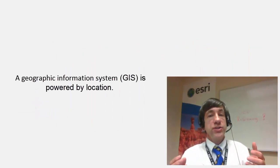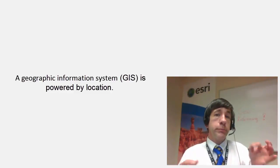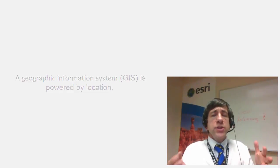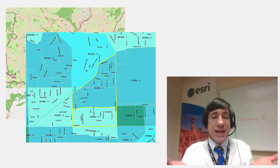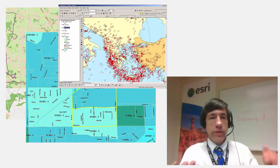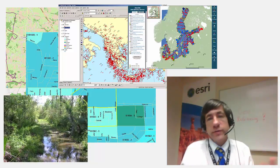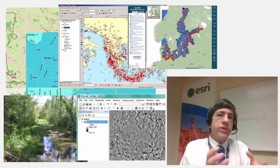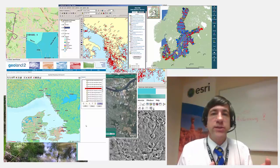A geographic information system, or GIS, is powered by location. All the data that we want to put in a GIS we want to have attached to real-world coordinates, whether that data is on the Earth's surface, above the Earth's surface, or below the Earth's surface — for example, geologic layers. So it's important to attach location to every data layer and every object that we want to map, study, and analyze.